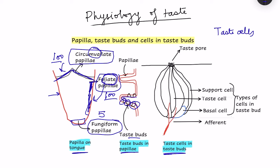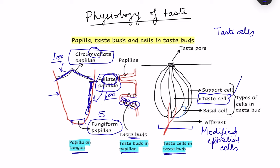Now let us see the structure of these taste buds. Here is a diagram of a single taste bud having lots of cells. These are modified epithelial cells, and they form the different types of cells in the taste bud. The important ones are the taste cells, which are basically the receptor cells — sensory transduction, that is conversion of the chemical causing the taste into an electrical signal, is done by these taste receptor cells. There are also support cells and basal cells. Taste cells have a lifespan of approximately 10 days, and it is the basal cells whose multiplication causes the production of new taste cells — these basal cells are basically stem cells.